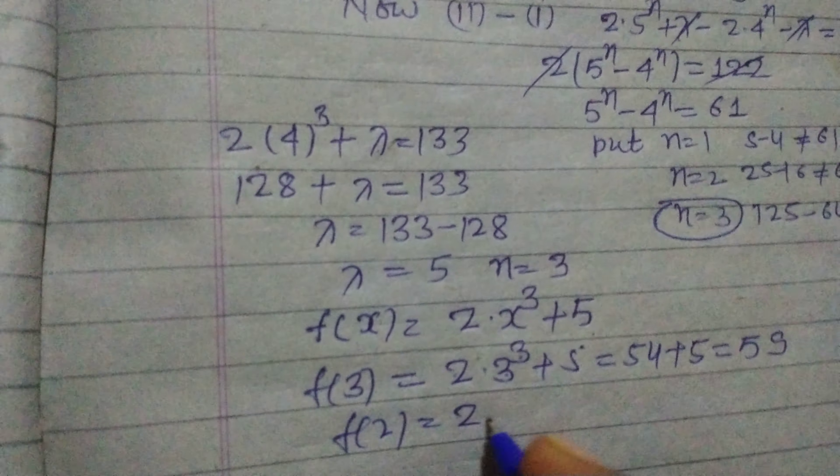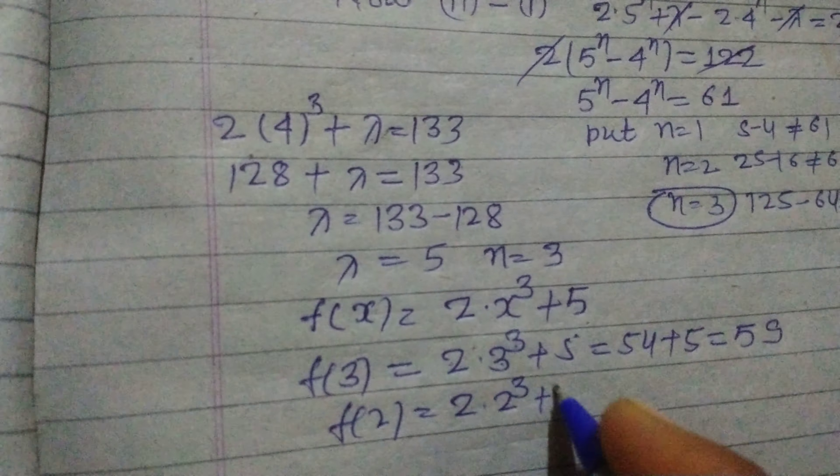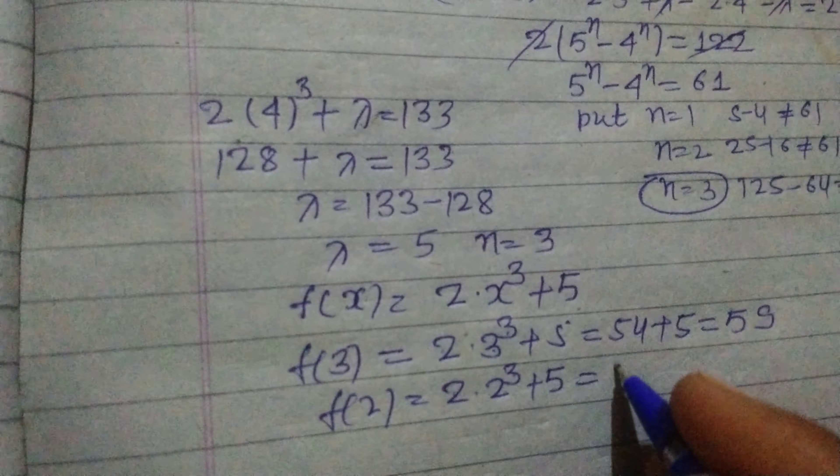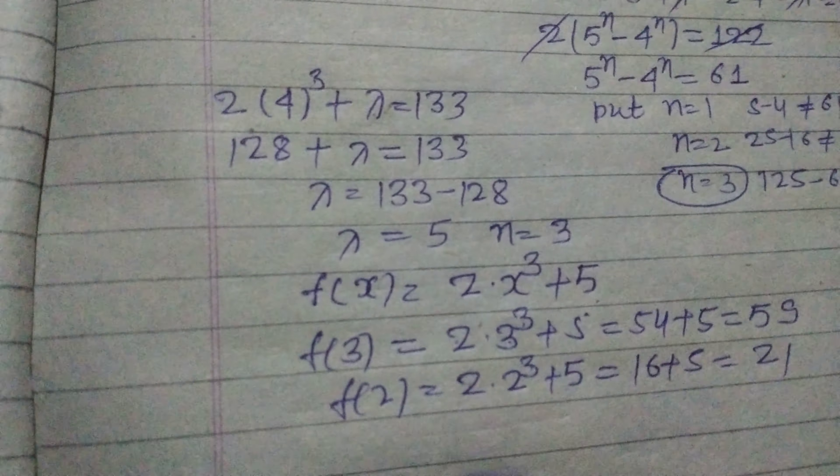f(2), when we put 2 × 2^3 + 5. So this is 8, 8 × 2 = 16 + 5, this is 21.